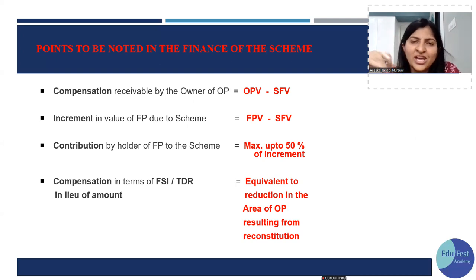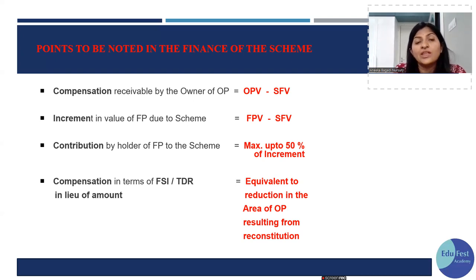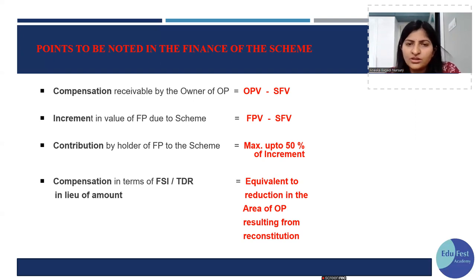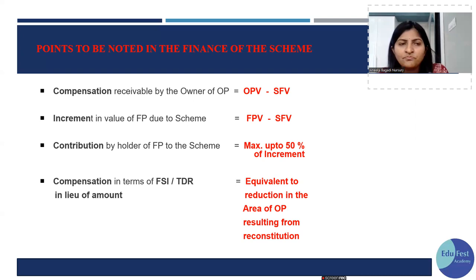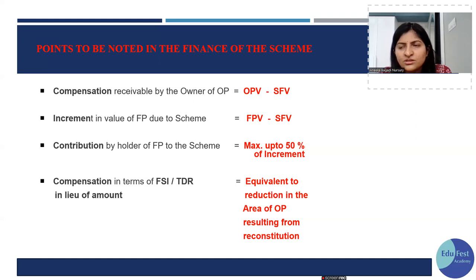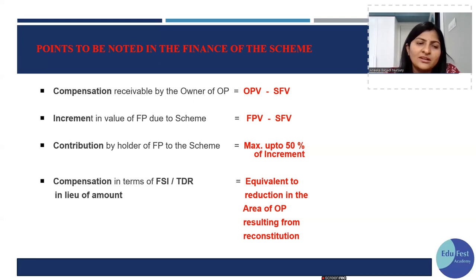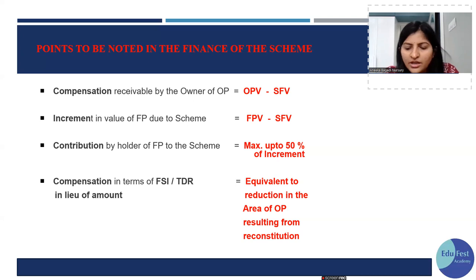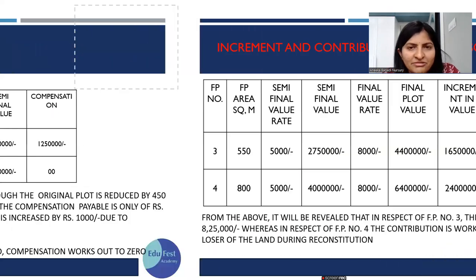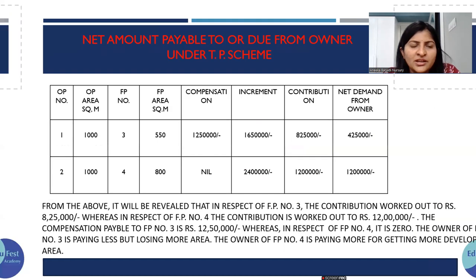Whatever amenities and facilities are provided, they increase the plot's value. The difference between the final plot value and the semi-final value is the increment. Contribution is 50% of that increment — half is borne by the planning authority and half by the owner. The maximum contribution is 50% of the increment. The next key point is compensation, increment, and net amount.